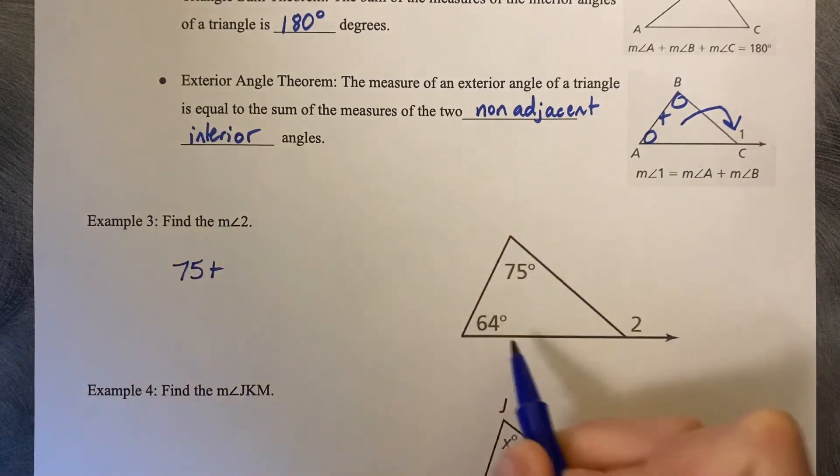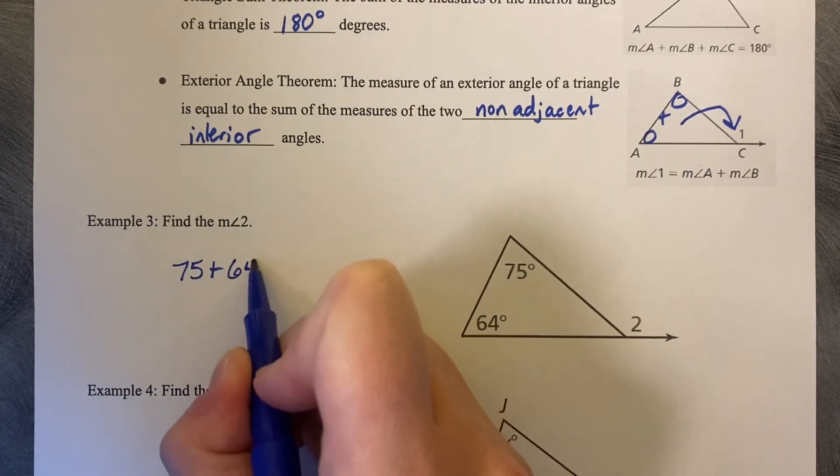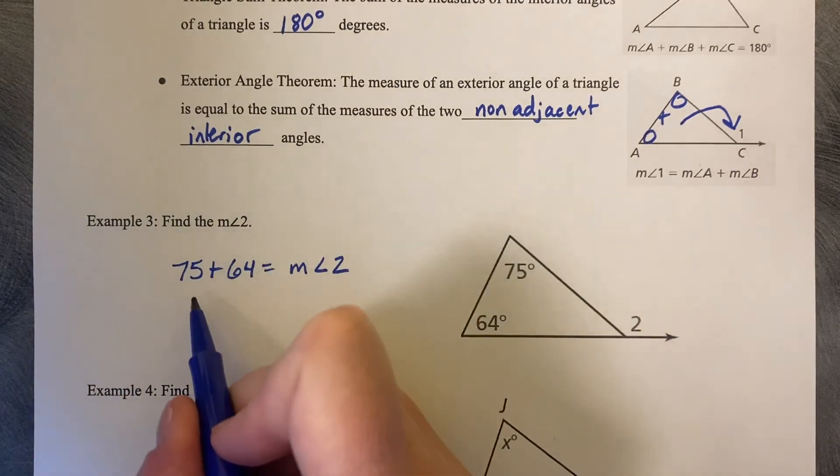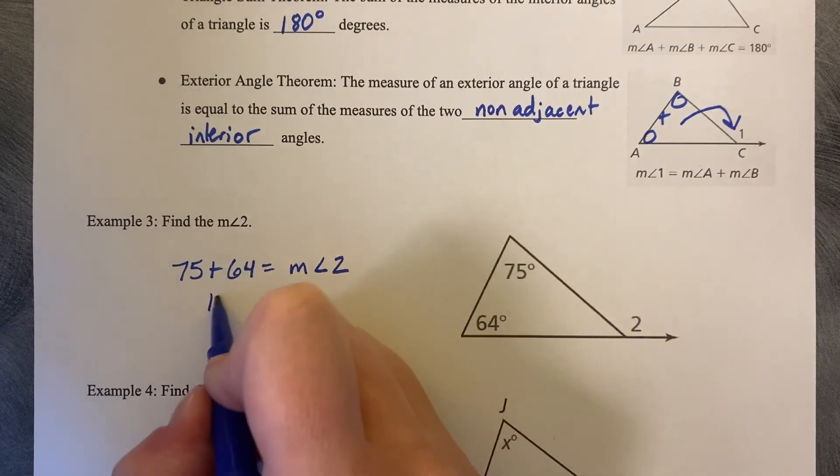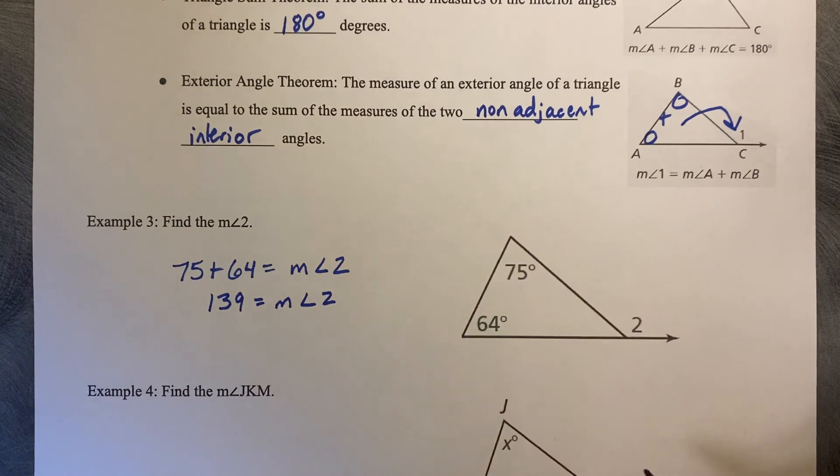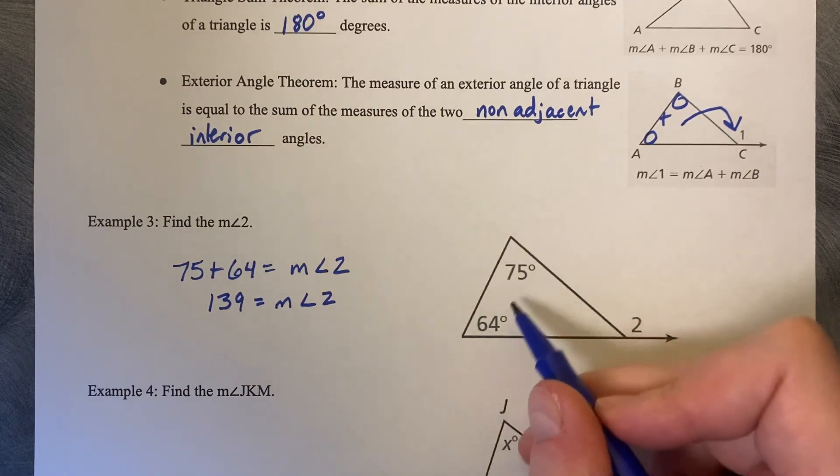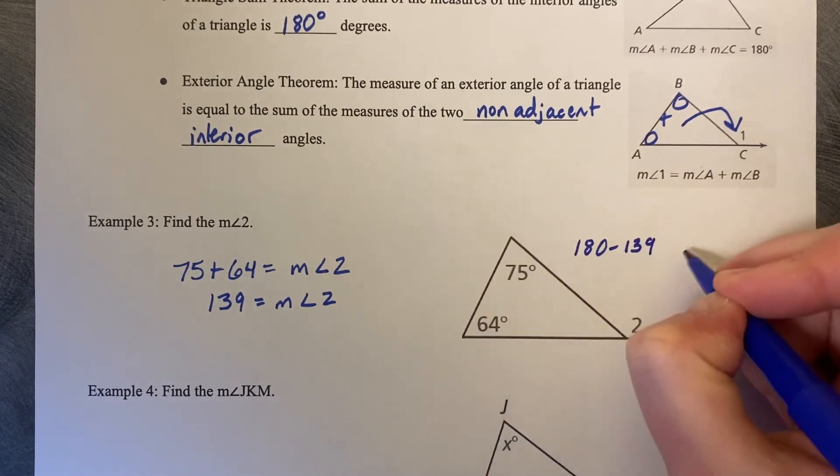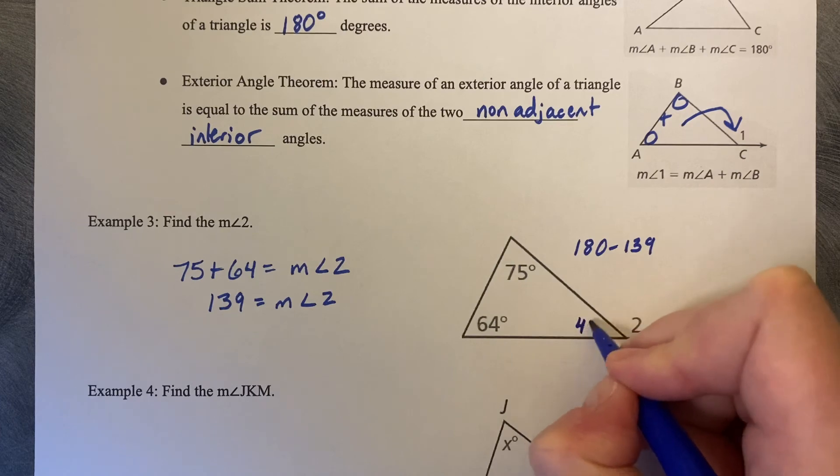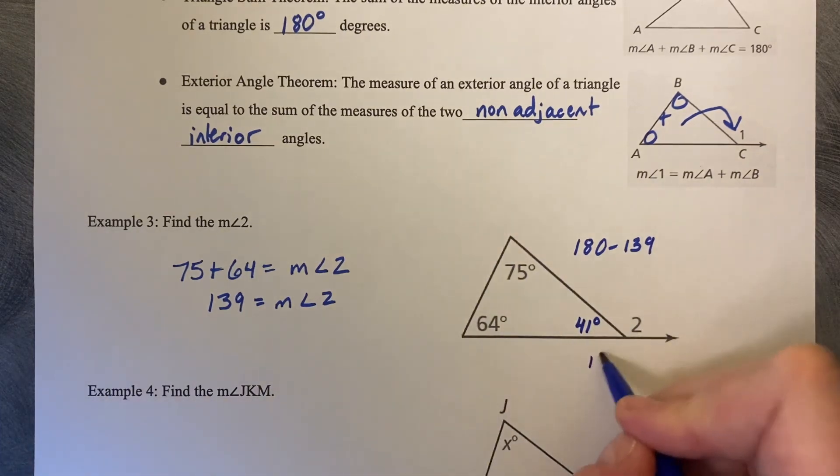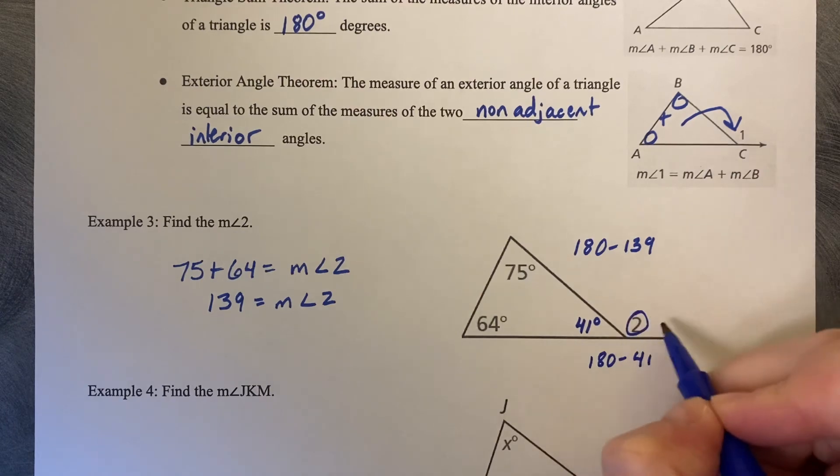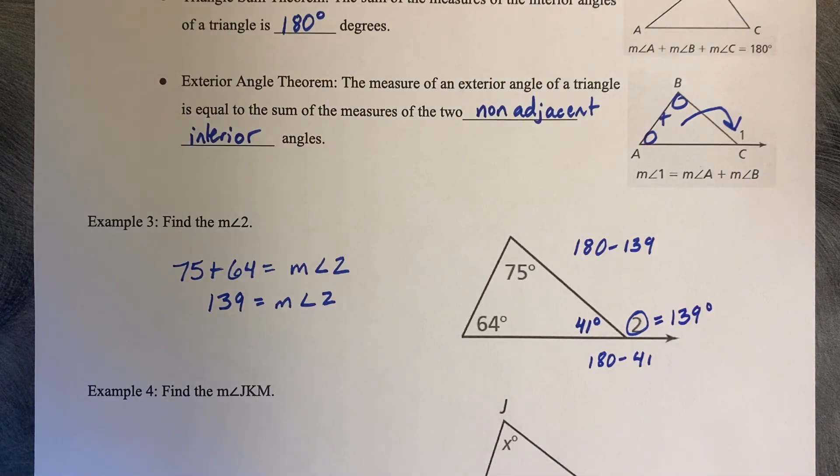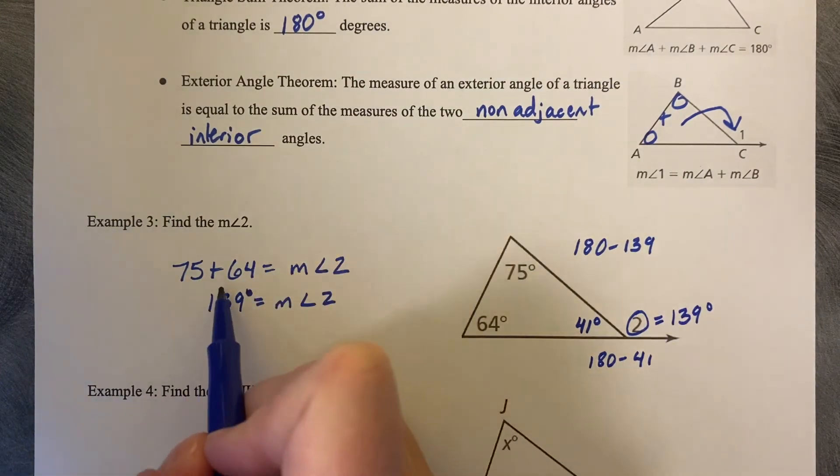So in this case, if I do 75 plus 64, that's going to give me the measure of angle 2. 75 plus 64 is 139, is the measure of angle 2. Let's prove it to ourselves again. So if I do 75 plus 64, that's 139. If I do 180 minus 139, we would get this angle to be 41. And if you do 180 minus 41, you get this measure of angle 2 to be equal to 139. So you get the same angle measure back, no matter which direction you go, it's going to be 139 degrees.